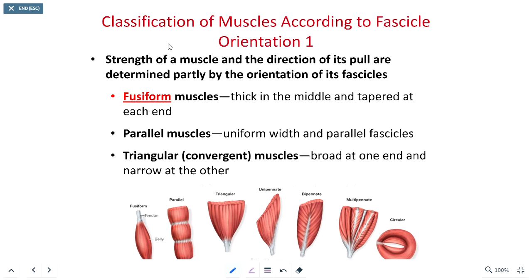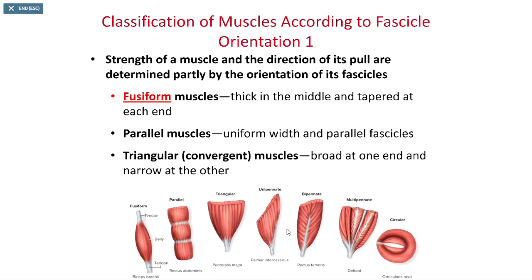As we look at our skeletal muscles, we need to classify them based on how their fascicles are oriented. We have several major categories: fusiform, parallel, triangular, unipennate, bipennate, multipennate, and circular.